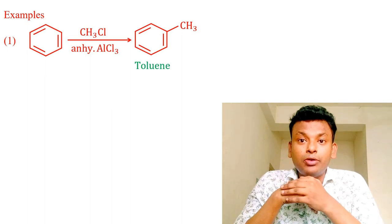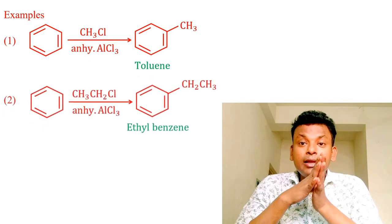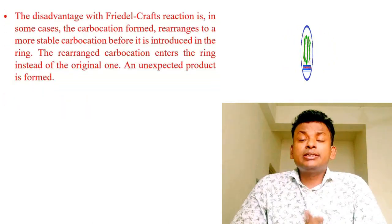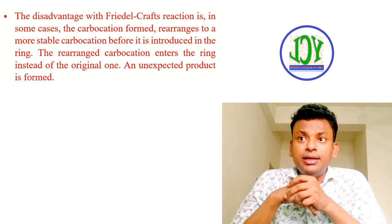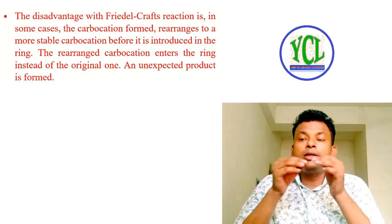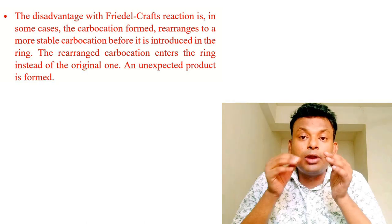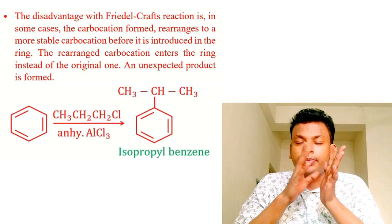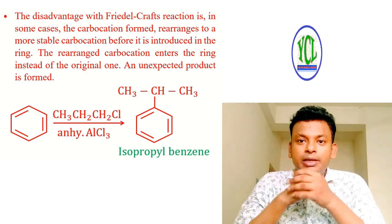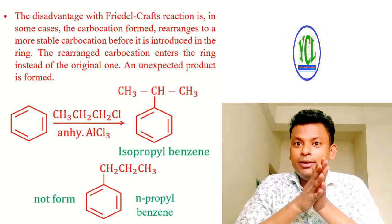AlCl₄⁻ acts as a base, forming AlCl₃ + HCl and the alkylbenzene product. Examples: benzene + CH₃Cl + anhydrous AlCl₃ → toluene; benzene + CH₃CH₂Cl (ethyl chloride) + anhydrous AlCl₃ → ethylbenzene. The disadvantage of Friedel-Crafts reaction: in some cases, the carbocation formed rearranges to a more stable carbocation before attacking the ring. The rearranged carbocation enters the ring instead of the original one, so an unexpected product is formed.